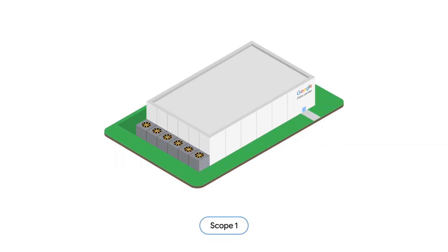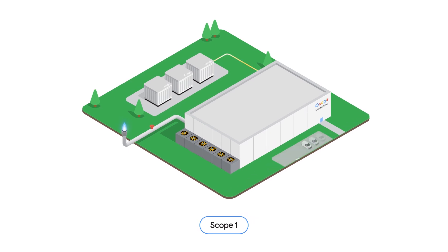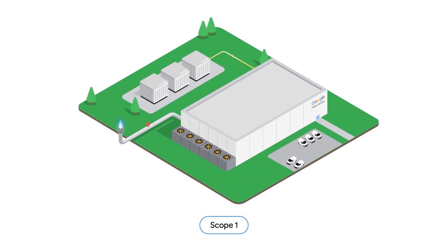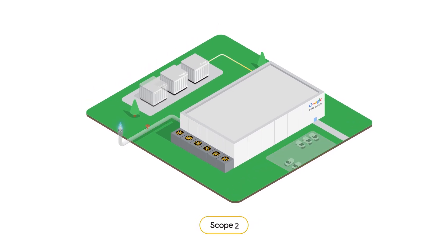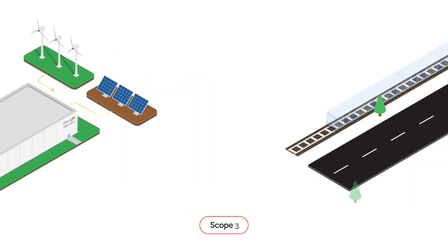For Google, they are scope one: direct emissions from backup generators, natural gas heating, and fleet vehicles. Scope two: emissions resulting from the power plants that provide electricity to our data centers.